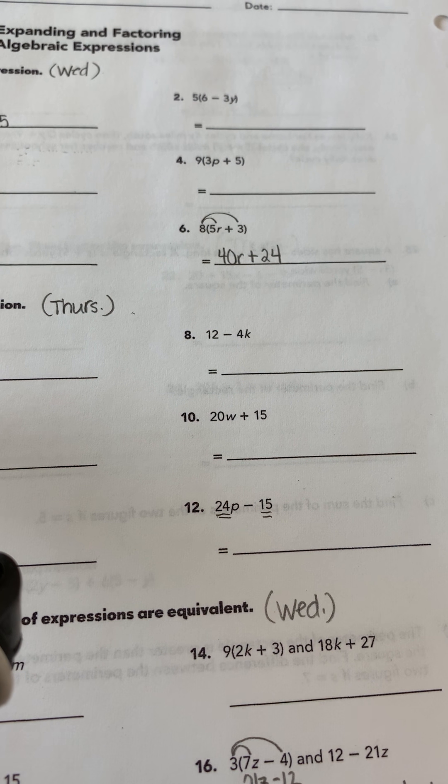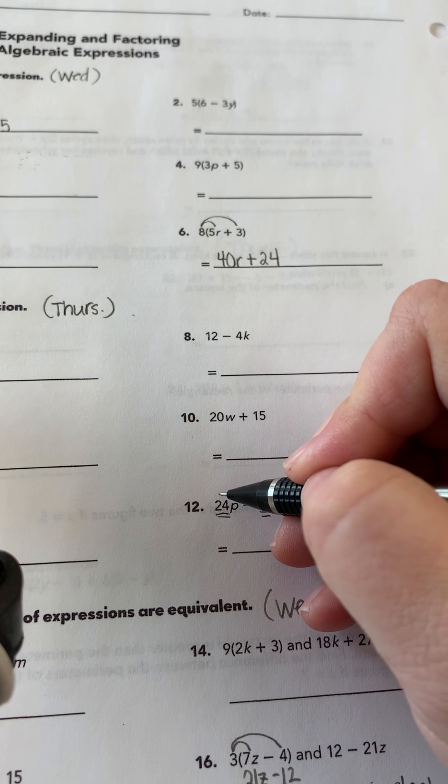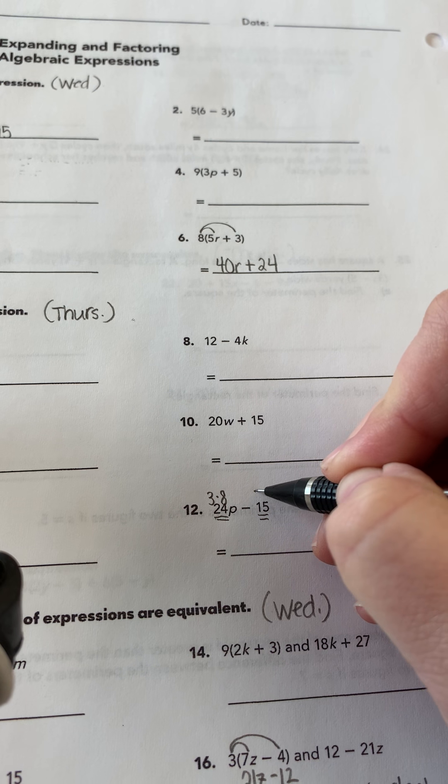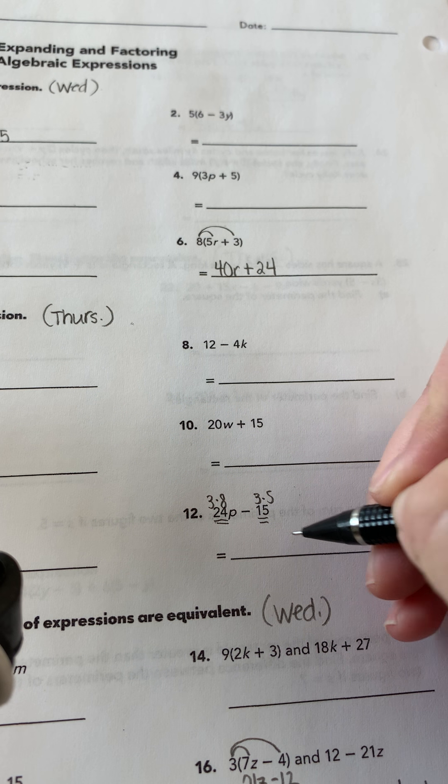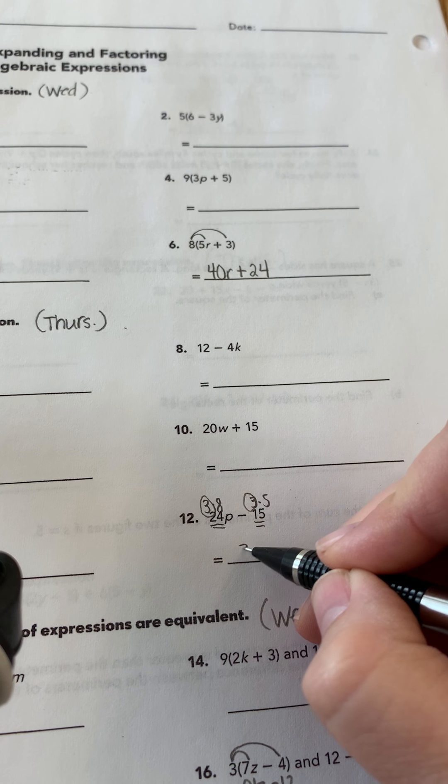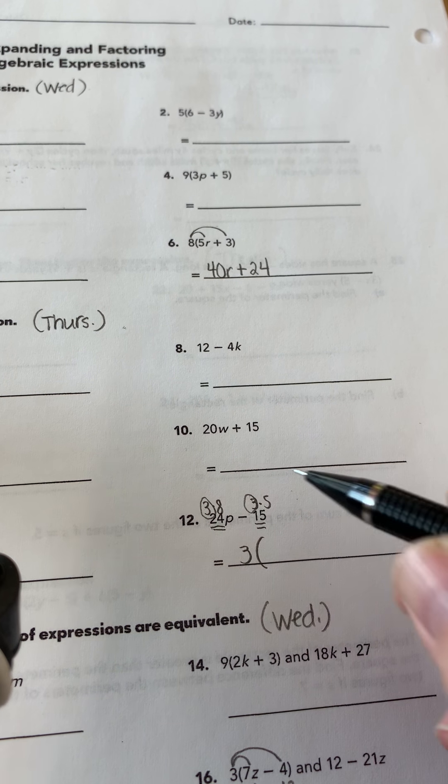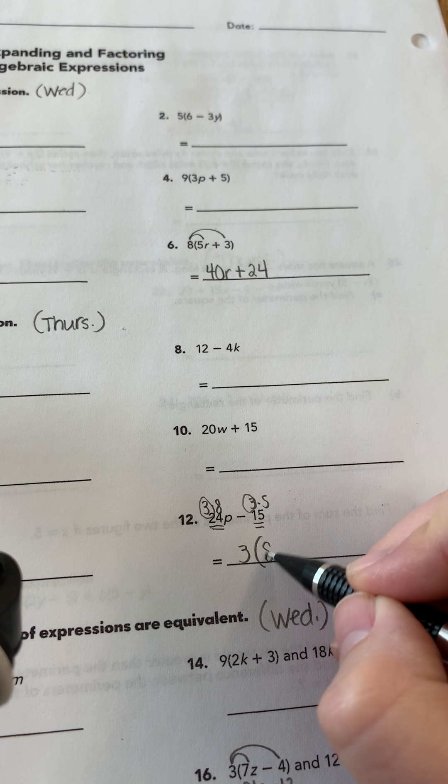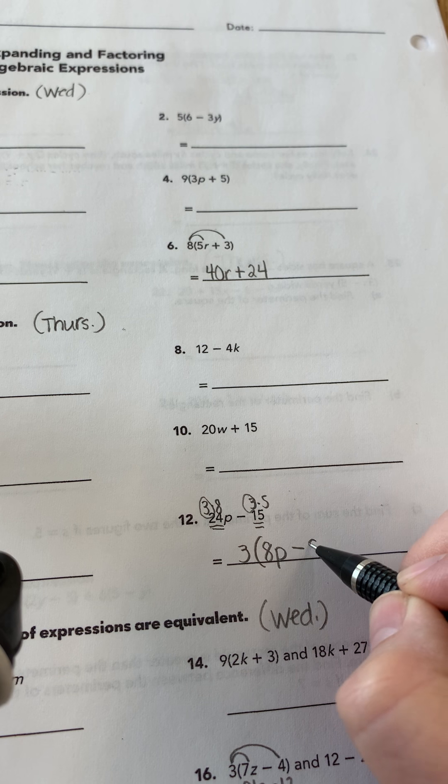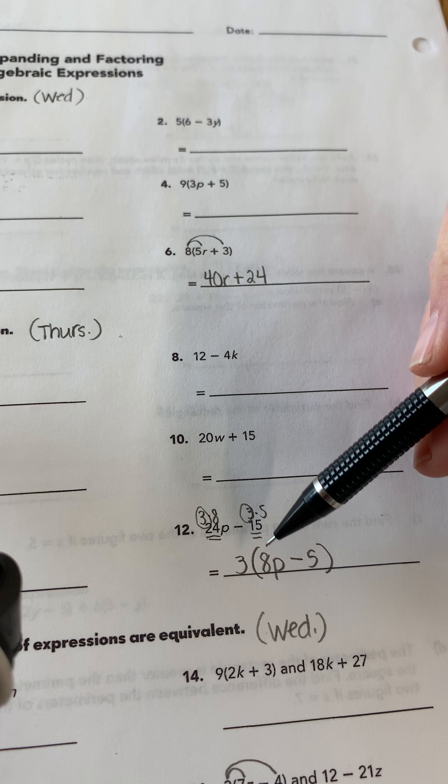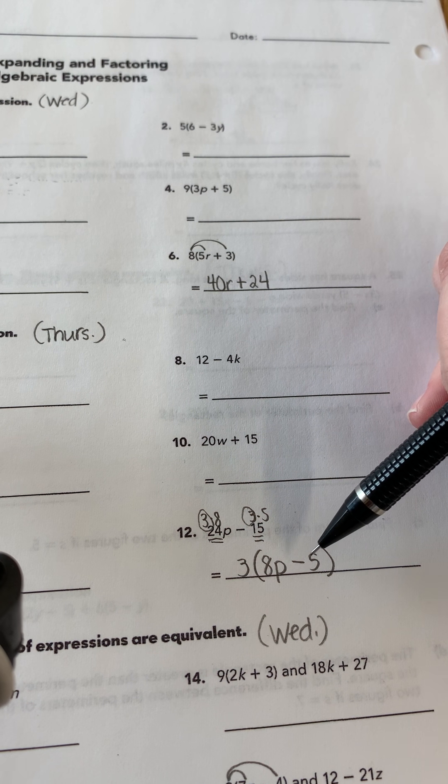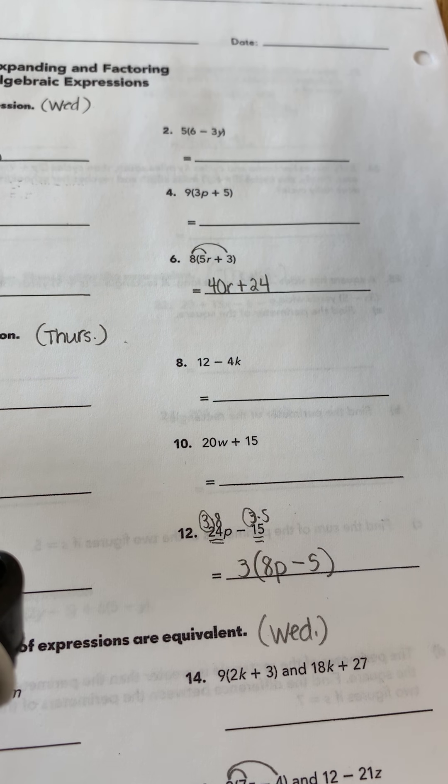Yeah, it's 3. So to get 24, it's 3 times 8. To get 15 is 3 times 5. The 3 is what I'm going to factor out. And what is left is 8p. We've got a minus sign. Minus what is left is a 5. And again, we can multiply it out to see. 3 times 8p is 24p minus 3 times 5 is 15. So we are good.